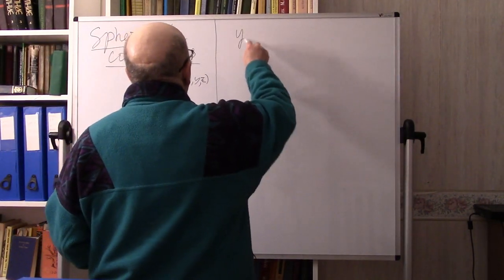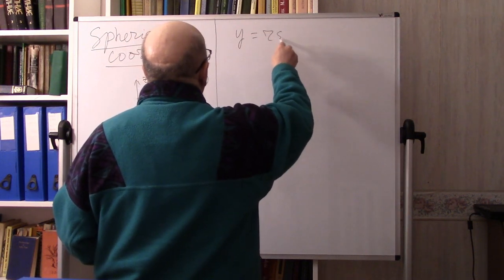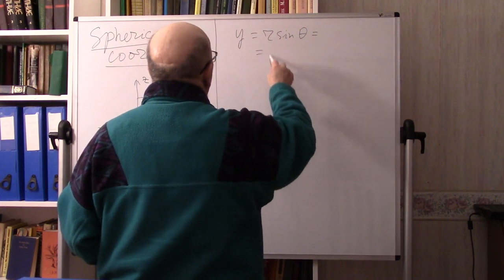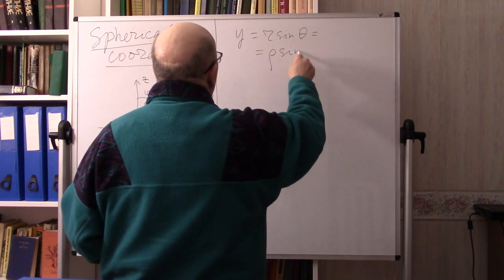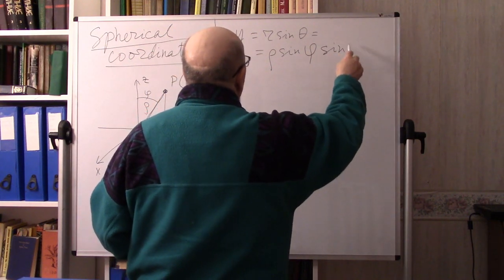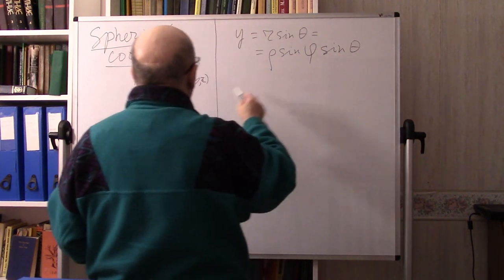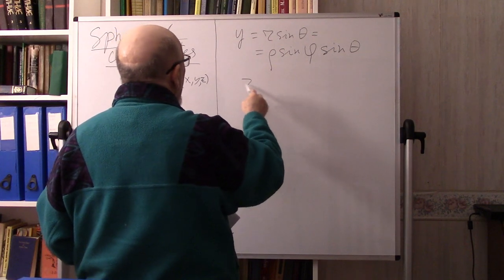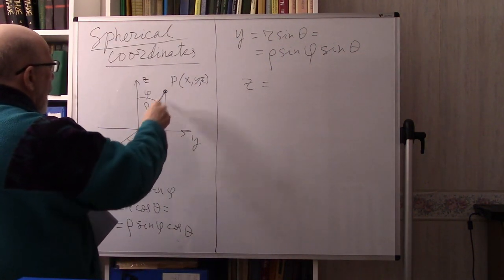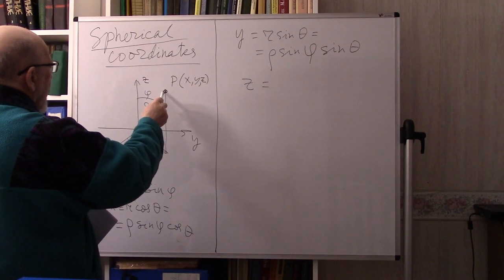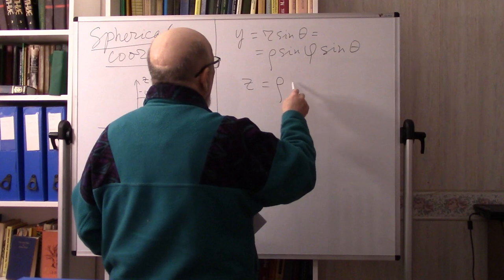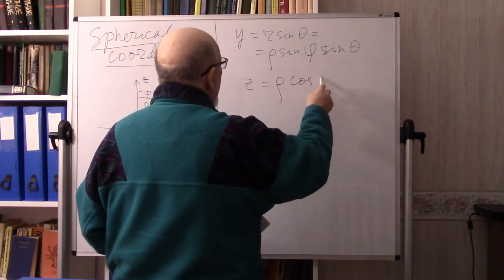Y equals R sine θ equals ρ sin φ sin θ. And Z equals ρ times cosine φ.